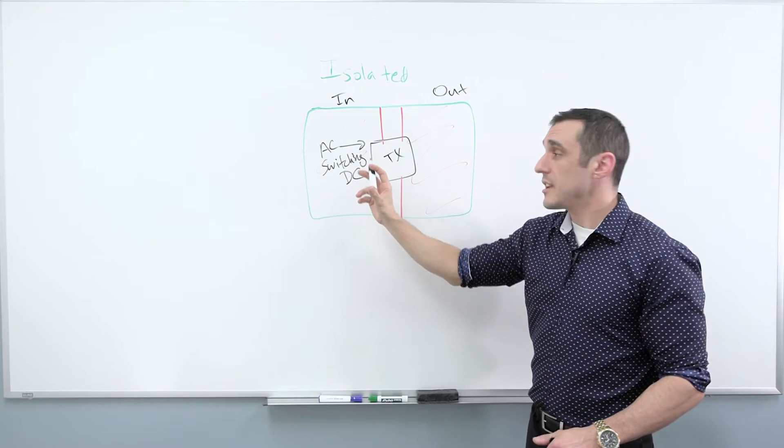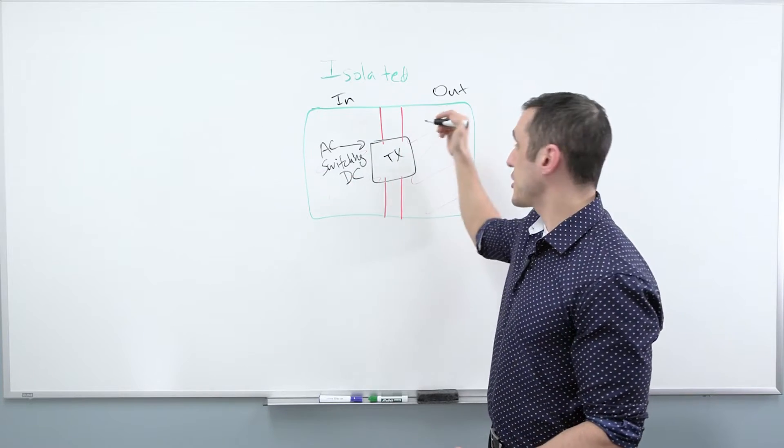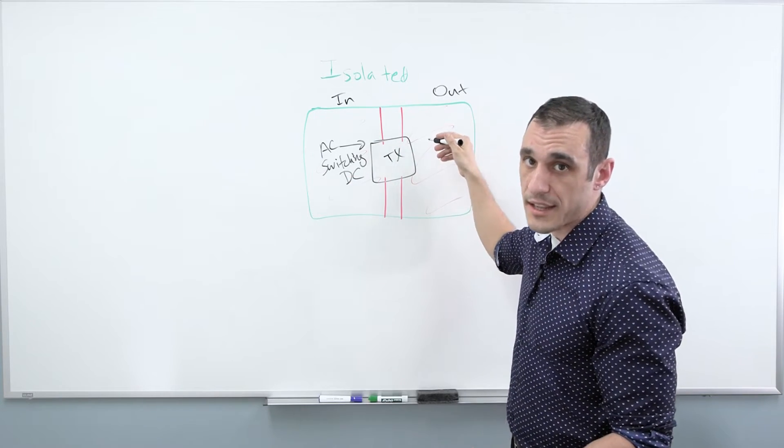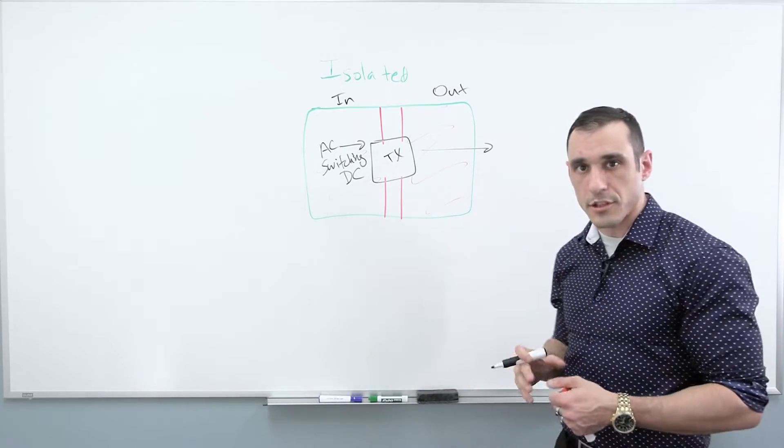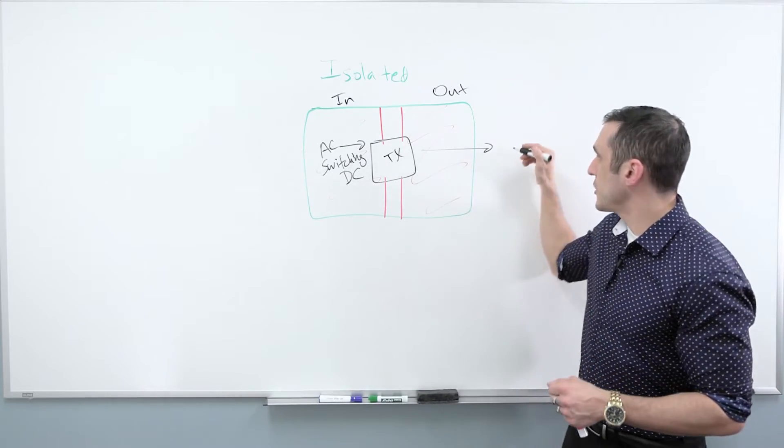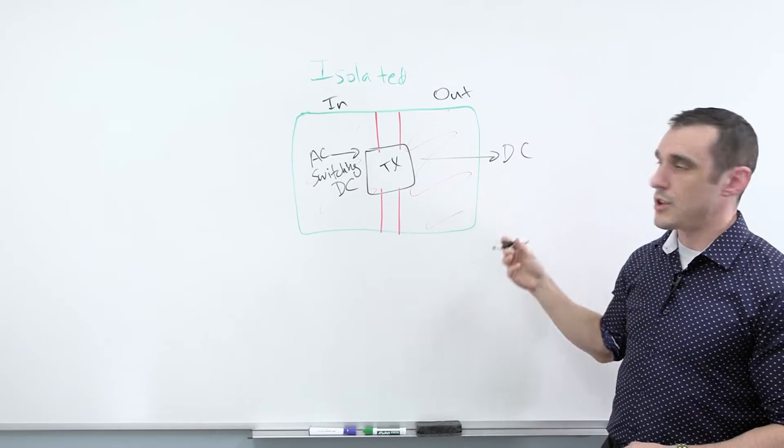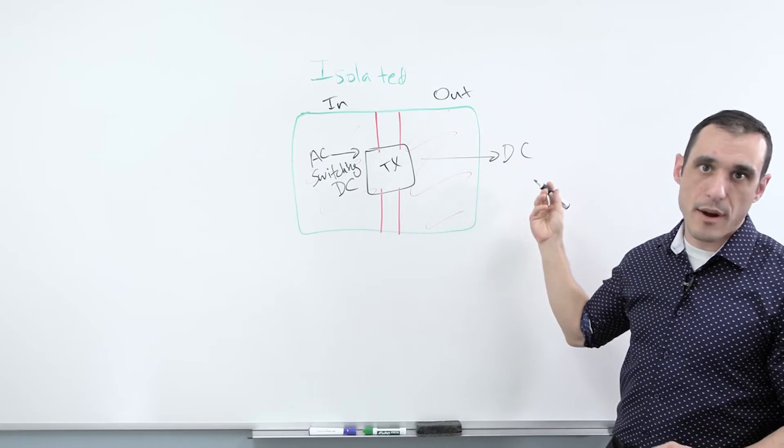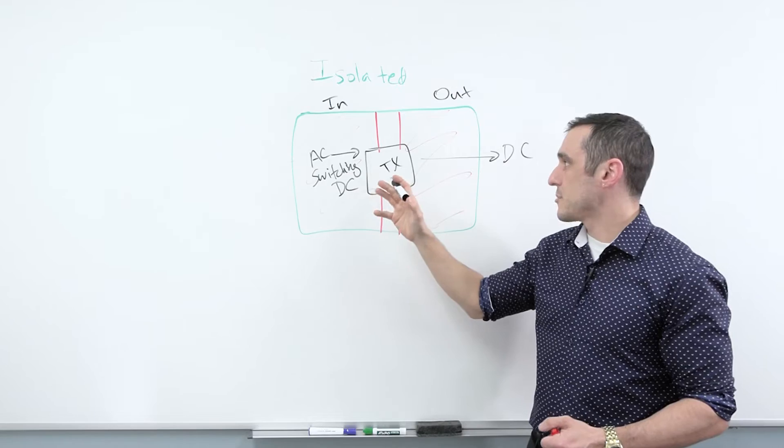Either I have AC coming in here to the transformer, or I have switching DC coming in here to the transformer. And that switching action in the primary side of the transformer will induce a current on the output side, which then is typically smoothed and filtered. And then that is output as generally a DC. This could be an inverter.